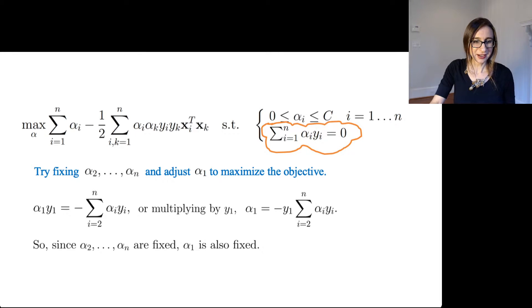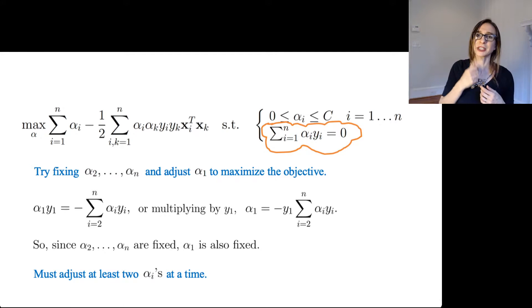So that's actually really bad. Since the other alphas are fixed, you can't adjust alpha 1. So if you're going to do some adjusting of the alphas to try to maximize that objective, you have to optimize at least two of them at a time. You have to be able to move two of them at a time so that you can stay within the feasible region.